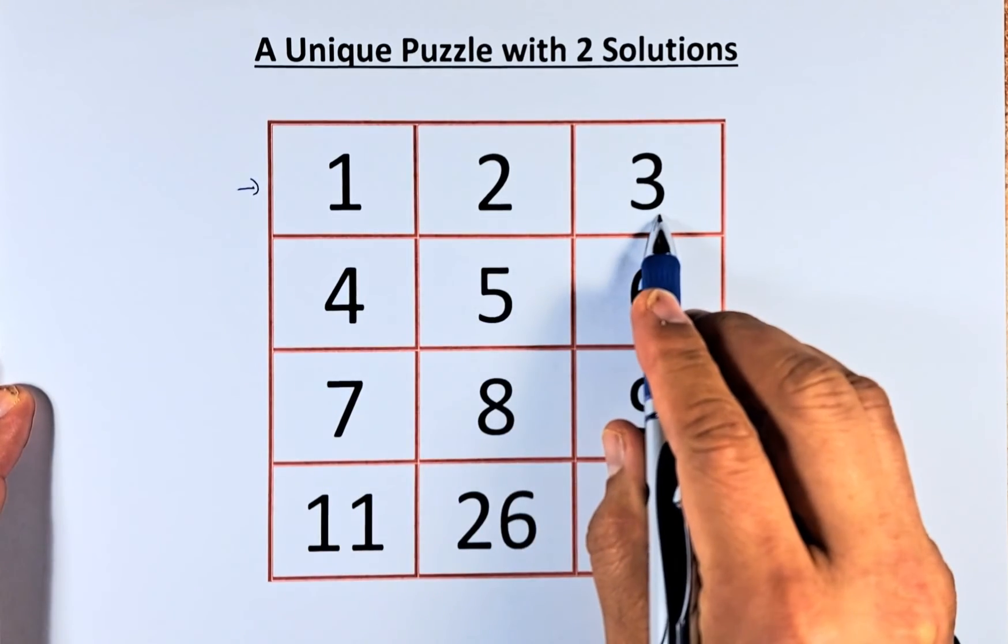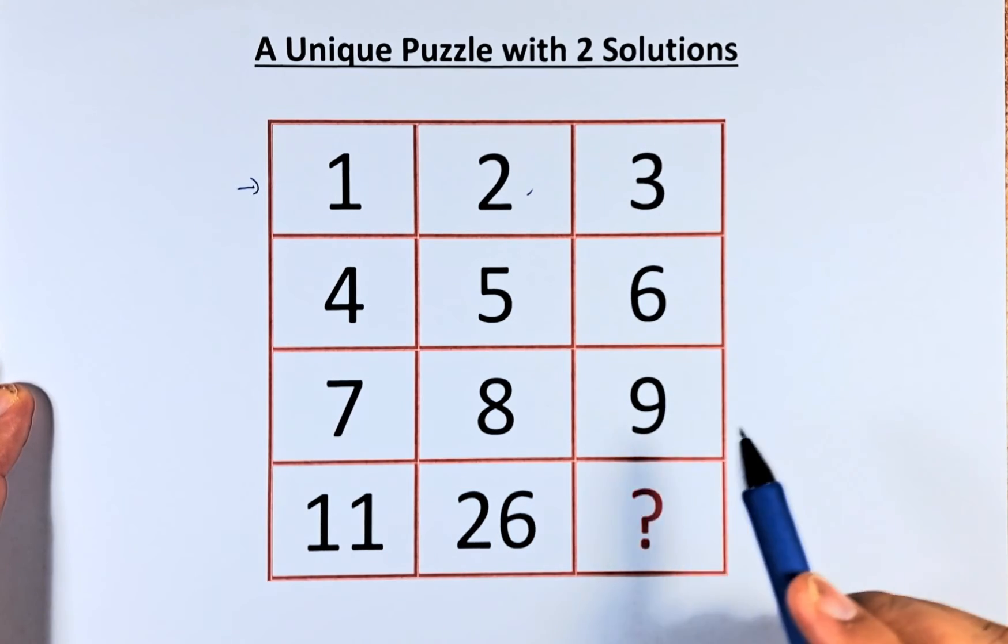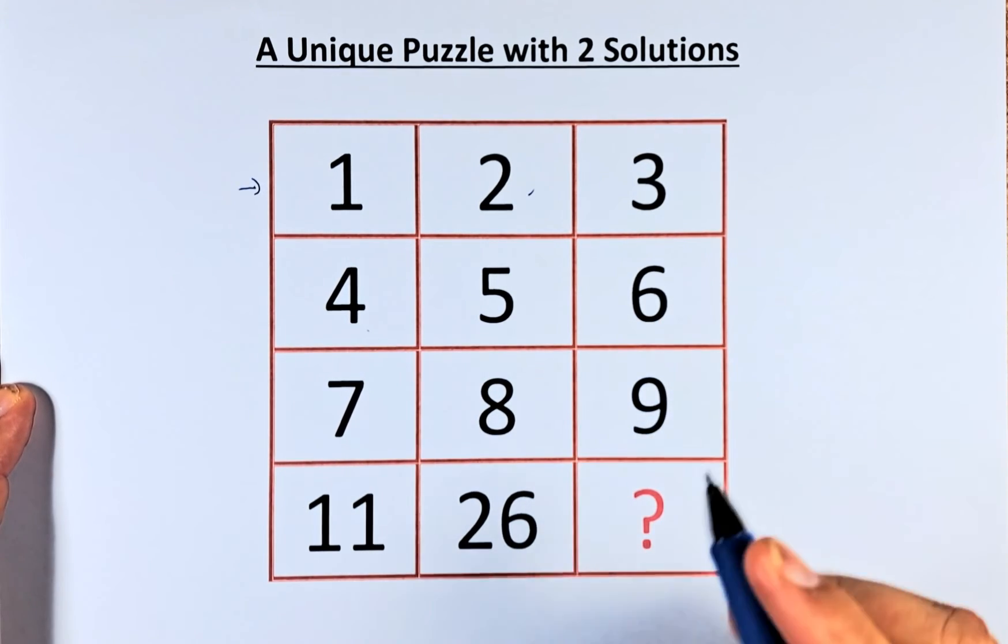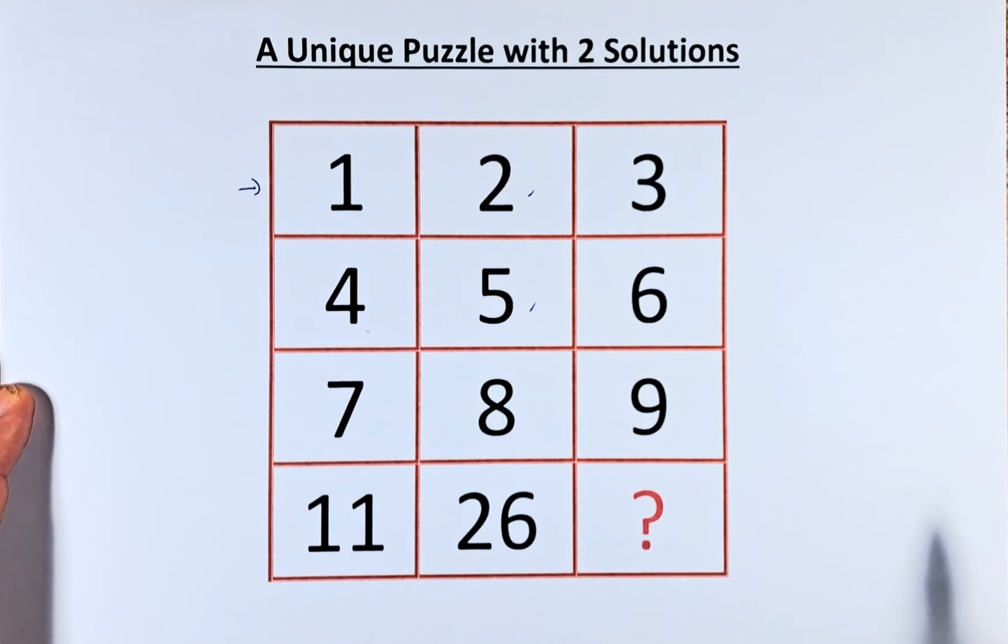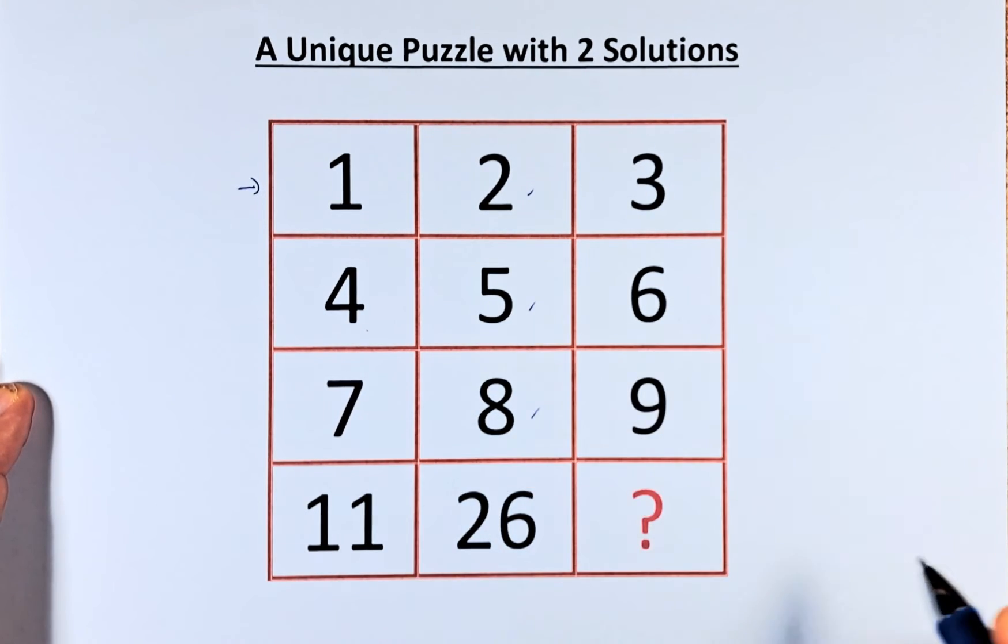You just add the first number and the last number. So 1 plus 3 is 4, you divide by 2 will give you 2. The second row, 4 and 6 when you add them up becomes 10 divided by 2 will give you 5. And then 7 plus 9 is 16 divided by 2 is going to be 8.